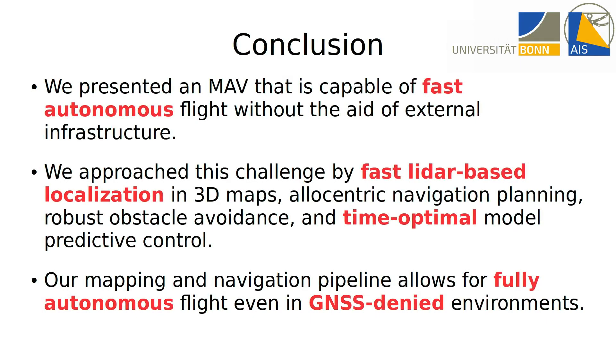We presented an MAV that is capable of fast autonomous flight without the aid of external infrastructure. We approached this challenge by fast radar-based localization in 3D maps, allocentric navigation planning, robust obstacle avoidance, and time-optimal model predictive control. Our mapping and navigation pipeline allows for fully autonomous flight, even in GNSS-denied environments.